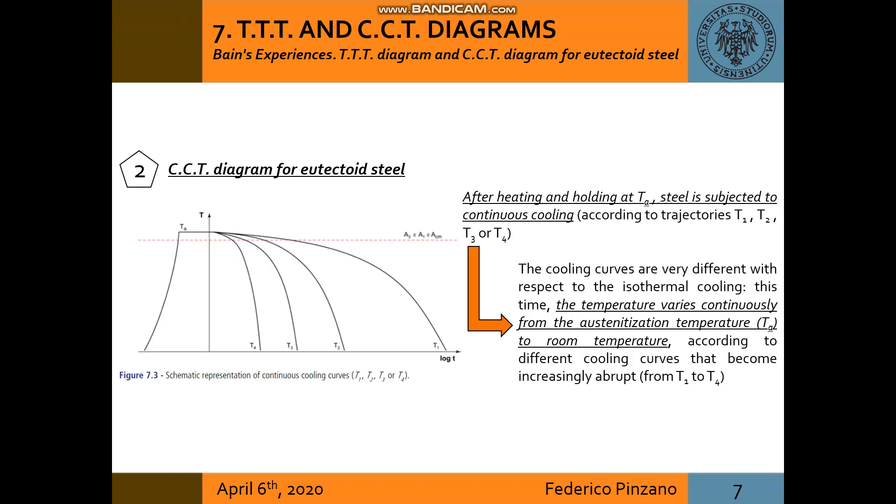Consider now CCT diagram for eutectoid steel. After the alloy is heated and cooled at a temperature TA, steel is subjected to continuous cooling. This time, the temperature varies continuously from the austenization temperature TA to room temperature, according to different trajectories T1, T2, T3 and T4.